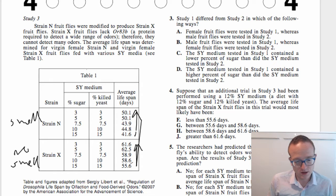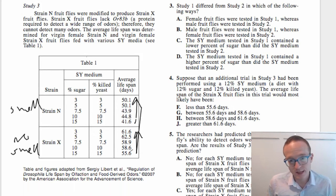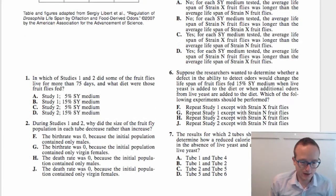So then you can notice that as the yeast increases, the average lifespan decreases. This is in both directions, so I'm drawing an arrow to show, like, okay, well there's a trend here. You know, more yeast, more sugar, less lifespan.